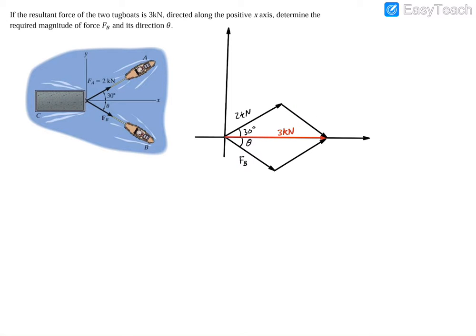And as you can see now, we have a closed parallelogram, and we can fill in some unknowns here. So we have 30 degrees here, and then again, this is two kilonewtons, and then this force up here is going to be the unknown force FB, and this here is our angle theta.